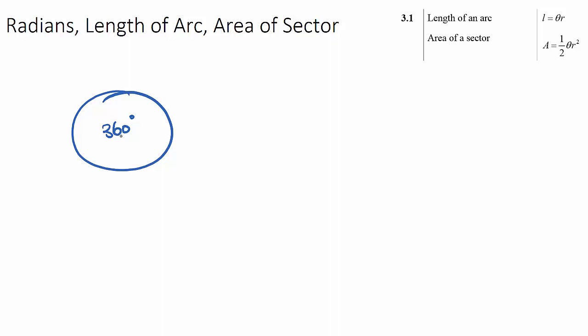But there is another measurement of an angle, which isn't degrees, and it's called radians. And in a circle, there are 2π radians, and this is the same as 360 degrees.